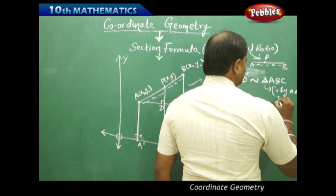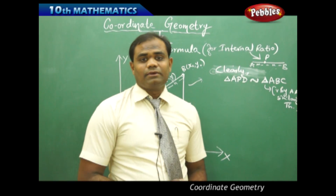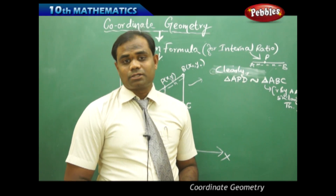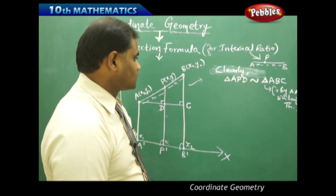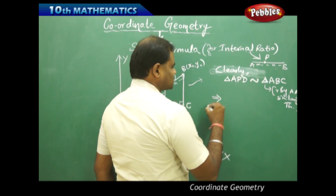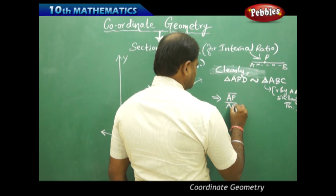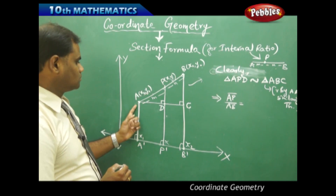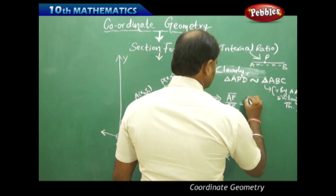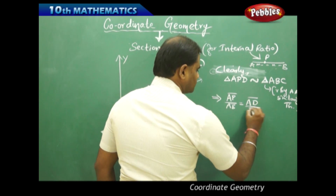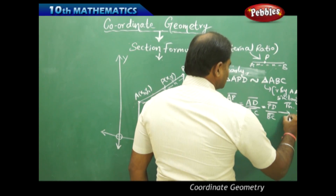Since by AA similarity theorem the two triangles are similar, we have the property that corresponding sides are in the same ratio — a similarity property discussed in previous sessions. So the two triangles similar implies corresponding sides are in the same ratio: AP/AB = AD/AC = PD/BC. This is Equation 1.